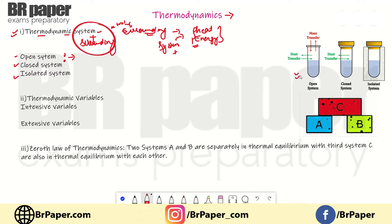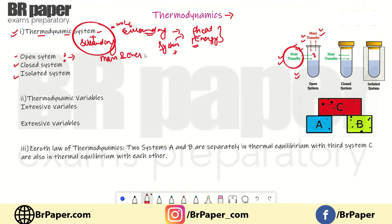As shown in the diagram, in an open system you have a container with a liquid inside. Due to the temperature difference, there will be energy transfer between the system and the surroundings. In an open system, both heat energy and mass can be exchanged with the surroundings. If both things are transferred, then that system is called an open system.